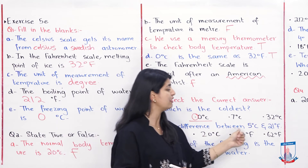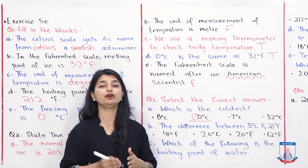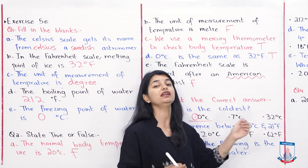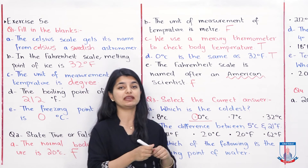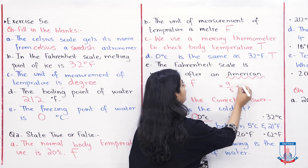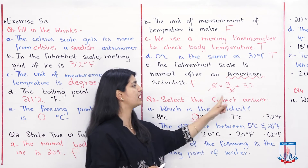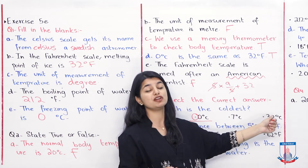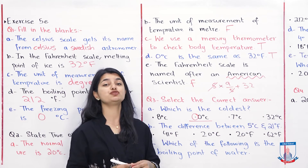Part B: the difference between 5 degrees centigrade and 21 degrees Fahrenheit. Since the two values use different scales, we convert 5 degrees centigrade to Fahrenheit: multiply by 9 over 5 then add 32. 5 and 5 cancel, giving 9, plus 32 equals 41 degrees Fahrenheit. Then 41 minus 21 equals 20 degrees Fahrenheit.